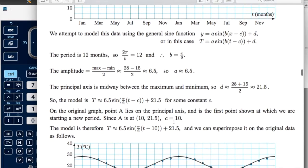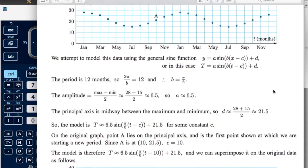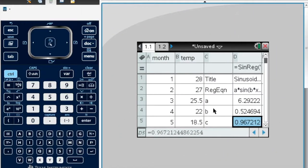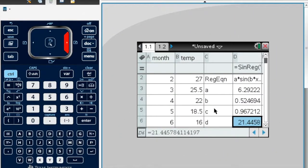If we scroll down, they ended up getting C is 10. Again, it's because of a different form. And the D is 21.4.